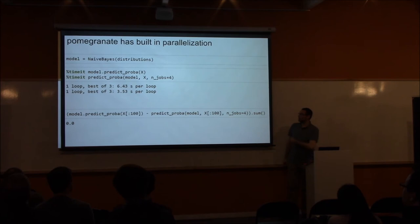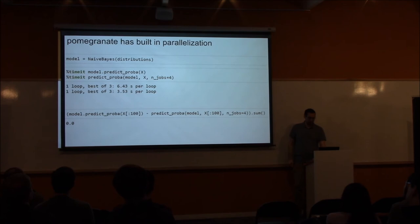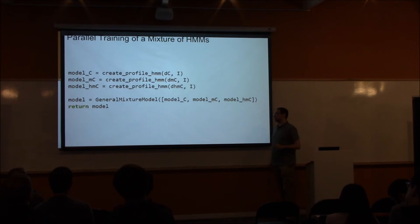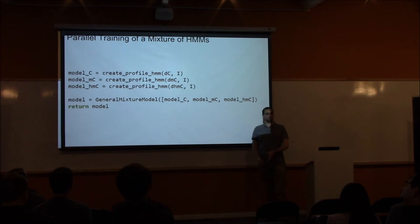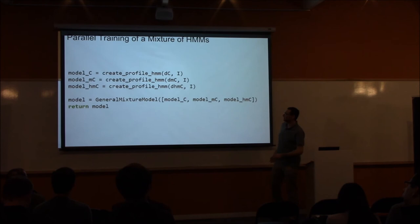Likewise, if you want to predict the probability instead of just the label, you get around two times speed improvement by using four jobs, and there's no difference in numerical precision between the numbers produced with or without parallelism. And to show you how to create a mixture of hidden Markov models in parallel: this is basically all the code you need. You have a function — in this case called create_profile_hmm from some undergraduate research — that returns a hidden Markov model. You have three such HMMs, and you pass them into a general mixture model. Instead of passing a normal distribution, you pass the whole hidden Markov model, because it's still a distribution.